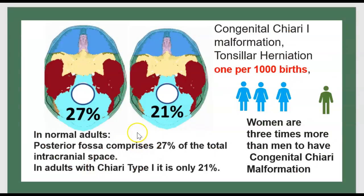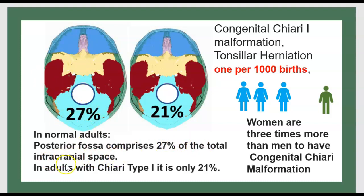From the epidemiology point of view, congenital Chiari malformation shows tonsillar herniation in approximately 1 per 1,000 births. Women are three times more likely than men to have congenital Chiari malformation. In a normal adult, the posterior fossa comprises 27% of the total intracranial space, but in an adult with Chiari type 1, it is only 21%.